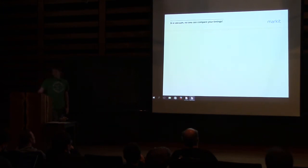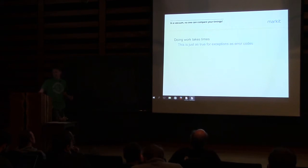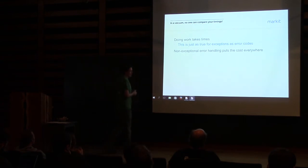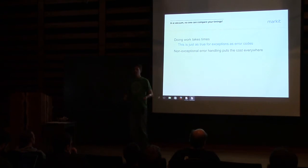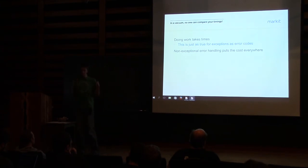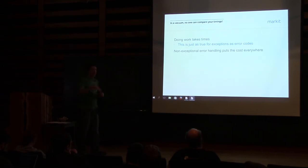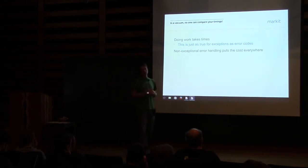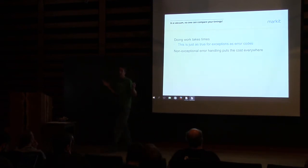Doing work takes time, and this is just as true for exceptions as for error codes. Non-exceptional error handling puts the cost everywhere — as you're executing code, you insert branches at every point where an error might occur, and everything up the call chain has to check whether an error occurred. There's a little bit of overhead at every point. That's work that costs something.